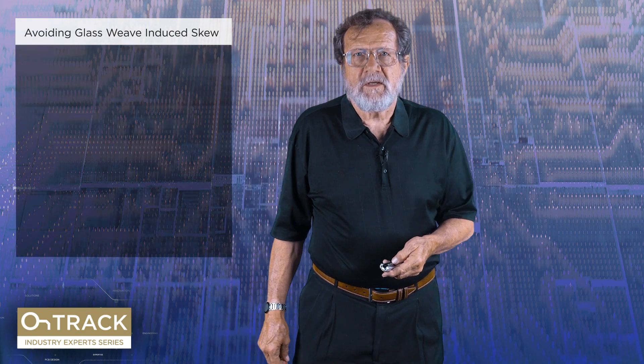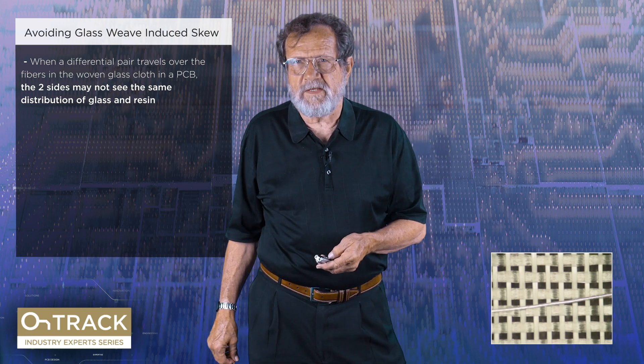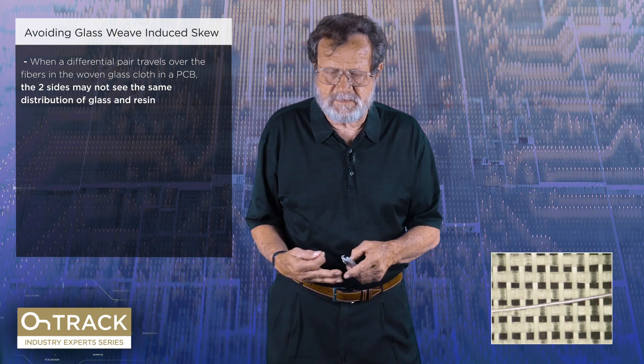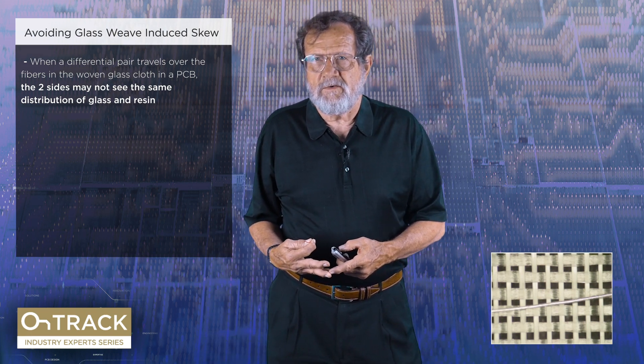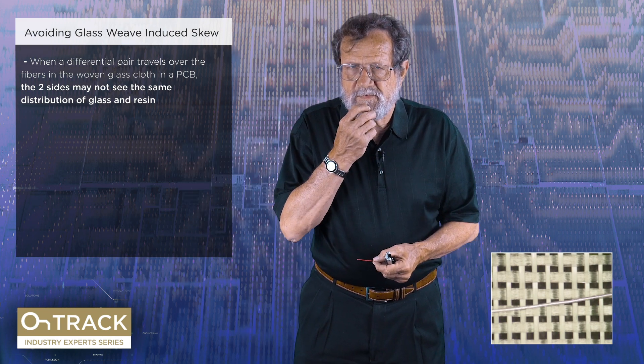This last issue is something that has crept in as we've gone up the speed curve with differential pairs. When we reached about five gigabits per second, we started to see something we hadn't seen before: the two sides of the differential pair did not arrive at the receiver at the same time. That's what we call skew. The weave of the glass can actually cause that problem. Shown here is a picture of a classic glass weave used in boards called 1080 glass, with a three-and-a-half mil trace running across it to give some sense of scale.